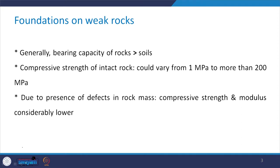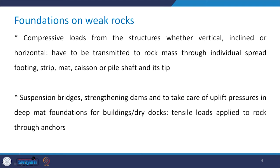Due to the presence of defects in rock mass, the compressive strength and the modulus of the rock mass are much less compared to that of intact rock. Compressive loads from structures, whether vertical, inclined or horizontal, have to be transmitted to the rock mass through individual spread footing, strip footing, mat foundation, caisson or pile shaft and its tip.